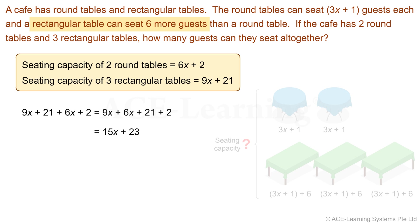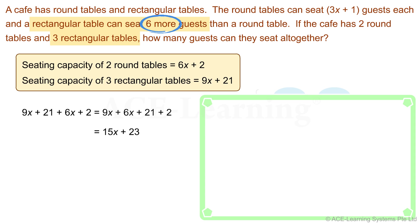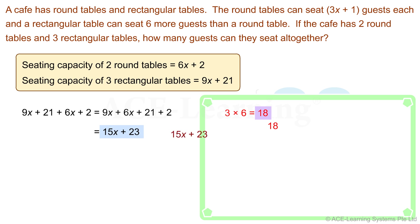The difference in seating capacity between a rectangular table and a round table is 6. There are 3 rectangular tables. If the seating capacity of these 3 rectangular tables is the same as the round tables, then the difference in capacity would be 3 times 6, which is 18. If we take the total capacity, 15x plus 23, and subtract 18 from it, we would get 15x plus 5 — the capacity of 5 round tables.